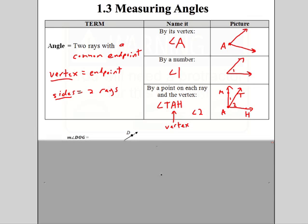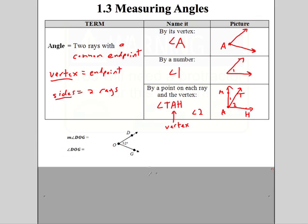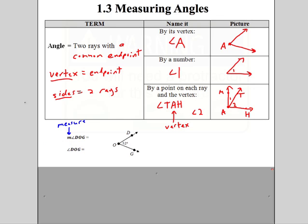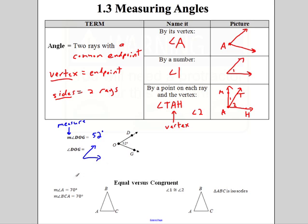Some other things we've got to make sure we're good with on angles: what if there's a little M in front? That actually refers to the measure of the angle — similar to segments where we had a bar on top versus no bar. This is saying, what is this angle measured in? Instead of inches or centimeters, angles are measured in degrees. So the measure of angle DOG is 52 degrees — that's the actual measure.